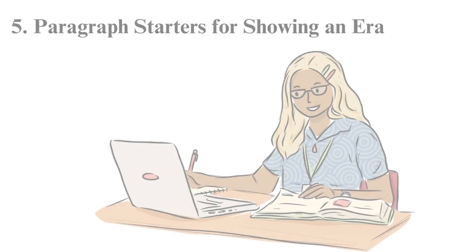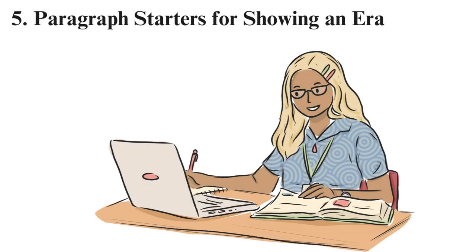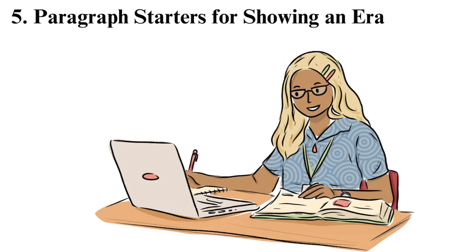5. Paragraph starters for showing an era. Use the following words to explain an event that happened in the past or present: recently, initially, traditionally, in the past, historically.